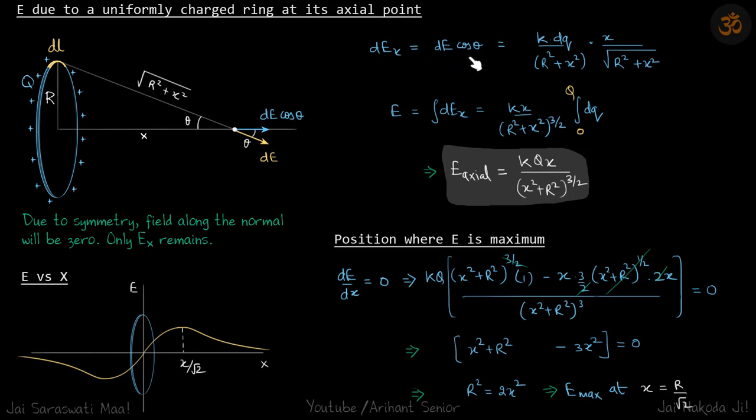The field dEx equals dE cos θ. dE is due to this dl, so we consider this length. It will be k dq divided by the square of this length, times cos θ. Cos θ will be x divided by the root of this.